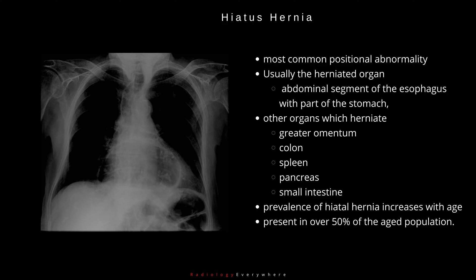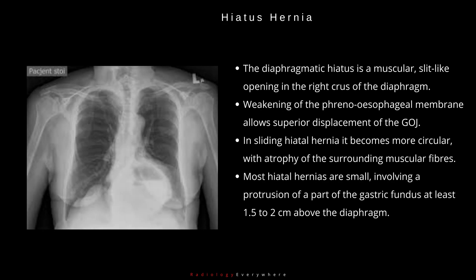The prevalence of hiatal hernia increases with age. Weakening of the phrenoesophageal membrane allows superior displacement of the gastroesophageal junction (GOJ). The diaphragmatic hiatus is normally a muscular, slit-like opening in the right crus of the diaphragm passing anterior to posterior. In a well-established sliding hiatal hernia, it becomes more circular, with atrophy of the muscular fibres.